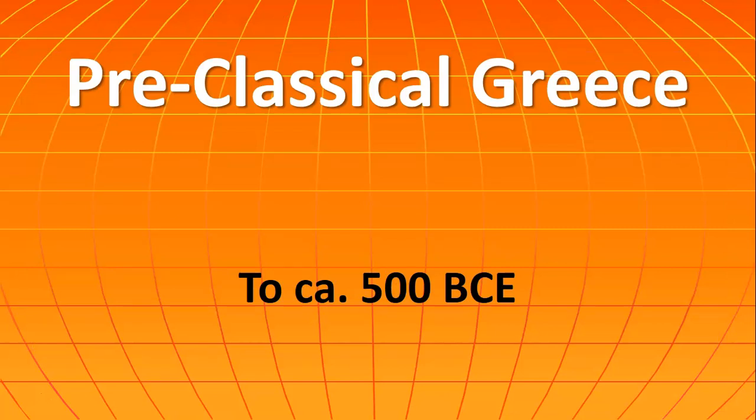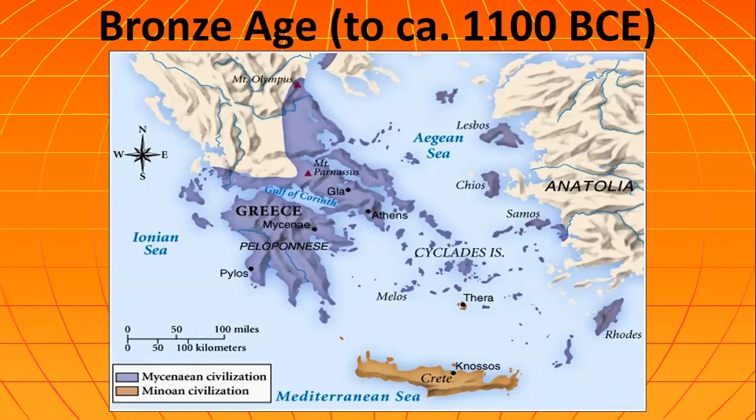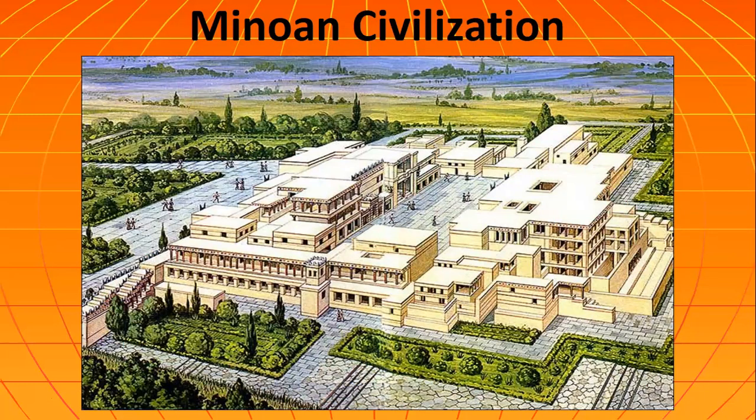Starting with the pre-classical era of Greece, let's begin with the Bronze Age — the time of two early civilizations. The first is the Minoan civilization, which is on the bottom of this map, and the Mycenaeans to the north. The Minoan civilization is named after King Minos. You might remember the story of the Minotaur, this half-bull, half-man creature that lives in a labyrinth underneath a palace. We found a palace that had a labyrinth under it, and we call the people that lived there the Minoans.